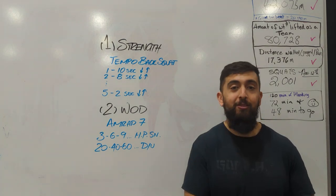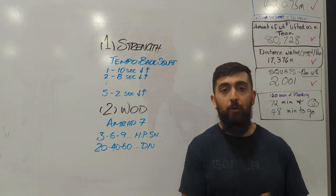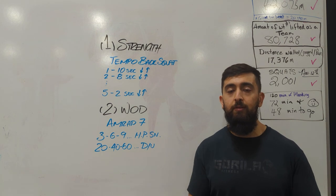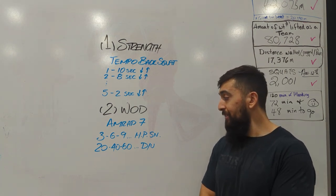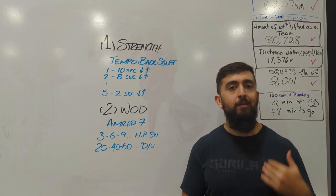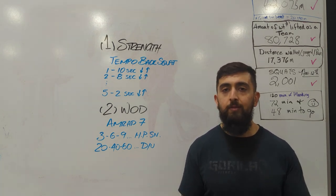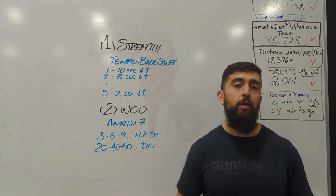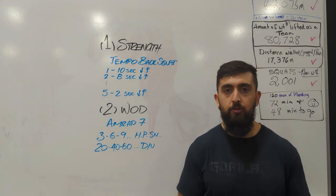With the hang power snatches, if it means just going with the barbell, then do that, especially if 75-55 is heavy. And then double unders, if you don't have them today, I'd say just go single skips, double the reps so that you can get more of the intensity piece out of this than worrying about trying to figure out how to do double unders.